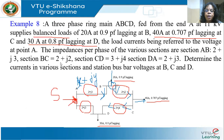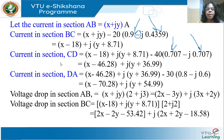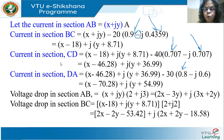Coming to node D, applying KCL, the current in section DA equals the current in CD minus the load current at D, which is 30 amperes at 0.8 PF lagging. Simplifying, the current in DA is (X−70.28)+j(Y+54.99).